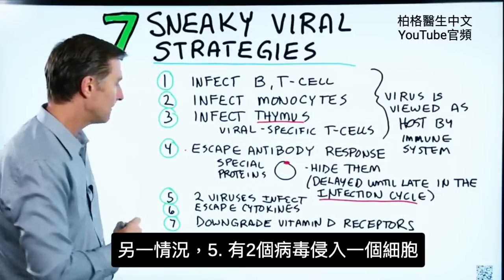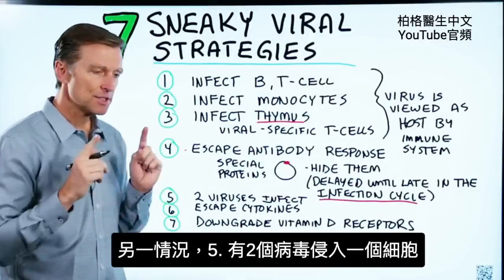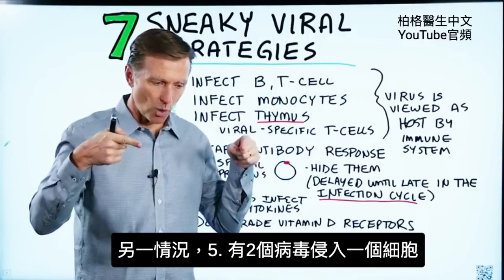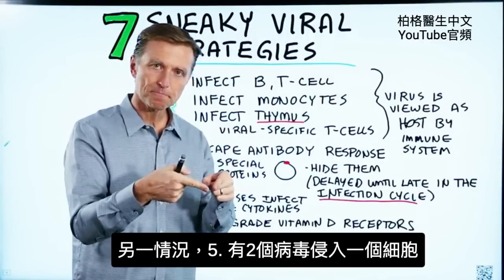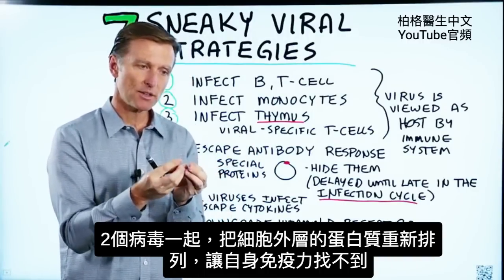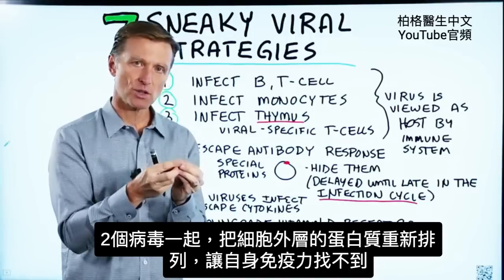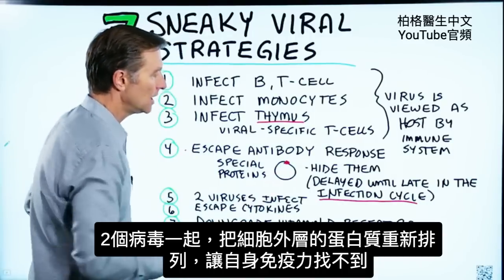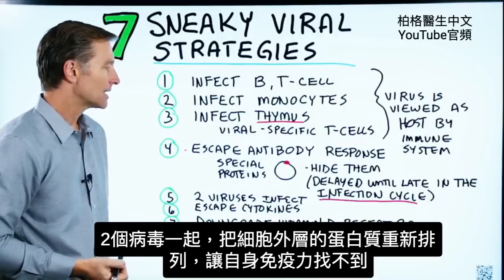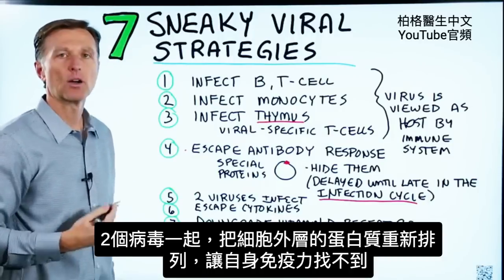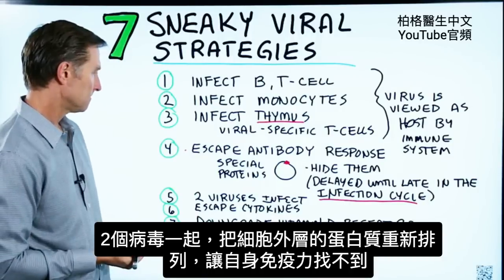Number five: you can have two viruses invade one cell, and then they work together to rearrange the proteins on the outside of the cell so they can escape attack from our own immune system.